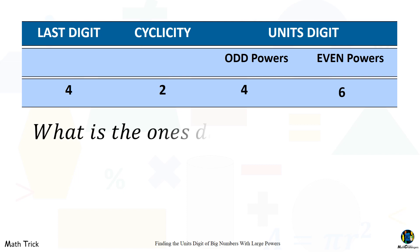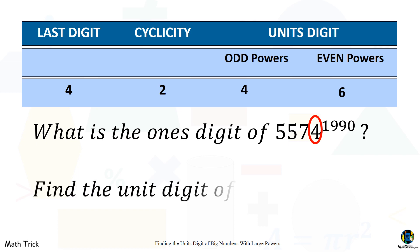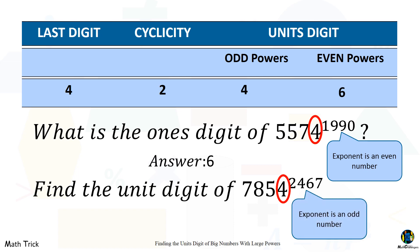Example: what is the one's digit of 5,574 to the 1,990th power? Find the unit's digit of 7,854 to the 2,467th power. To answer these questions, you only have to look at the exponents — if it is an even number, the unit's digit is six; if the exponent is an odd number, the unit's digit is four.